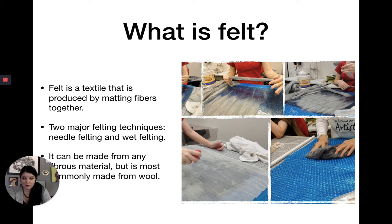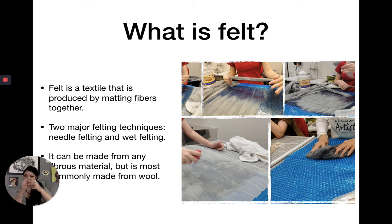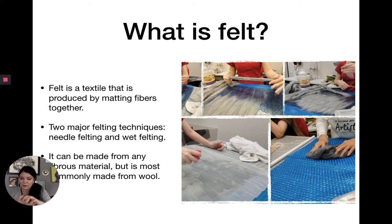Felt is a textile that's produced by matting fibers together. Maybe when you were a little kid and you got really bad tangles in your hair — you'd go swimming in the creek, run around, let your hair dry, and it created an insane knot your grandmother called a rat's nest. That tangling kind of fiber is basically a kind of felting. It's just matting fibers together so they become one new flat entity.